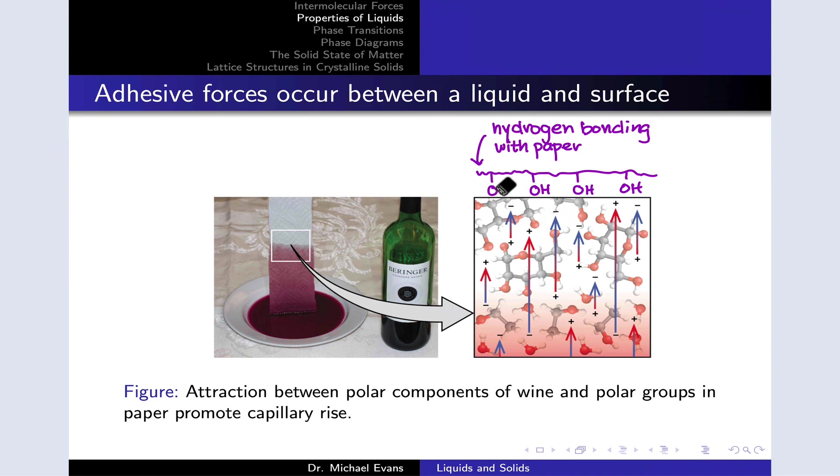The paper towel molecules include OH groups that can hydrogen bond with the sugar and ethanol molecules in the wine, as well as the water molecules in the wine.